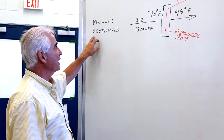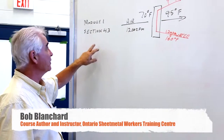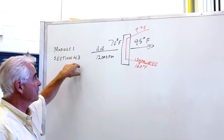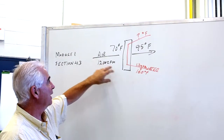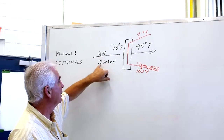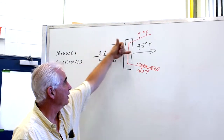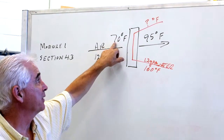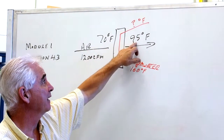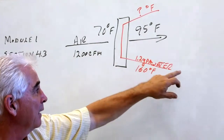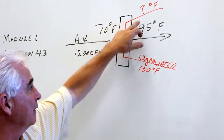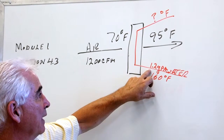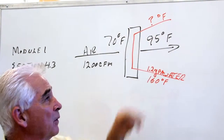This is an example of the heat balance equation from Module 1, Section 4.3. The question says: if we have a coil with air flowing across the coil at 1200 CFM, entering at 70 degrees Fahrenheit, leaving at 95 degrees Fahrenheit, and we have water flowing through the coil entering at 160 degrees at 1.2 gallons per minute, what is the temperature of the water coming out?